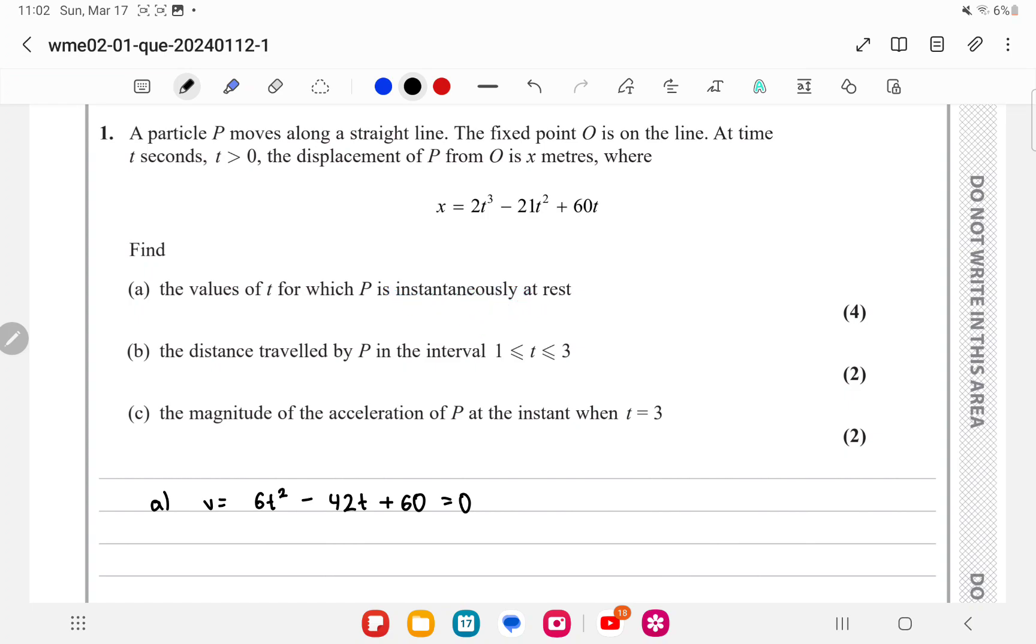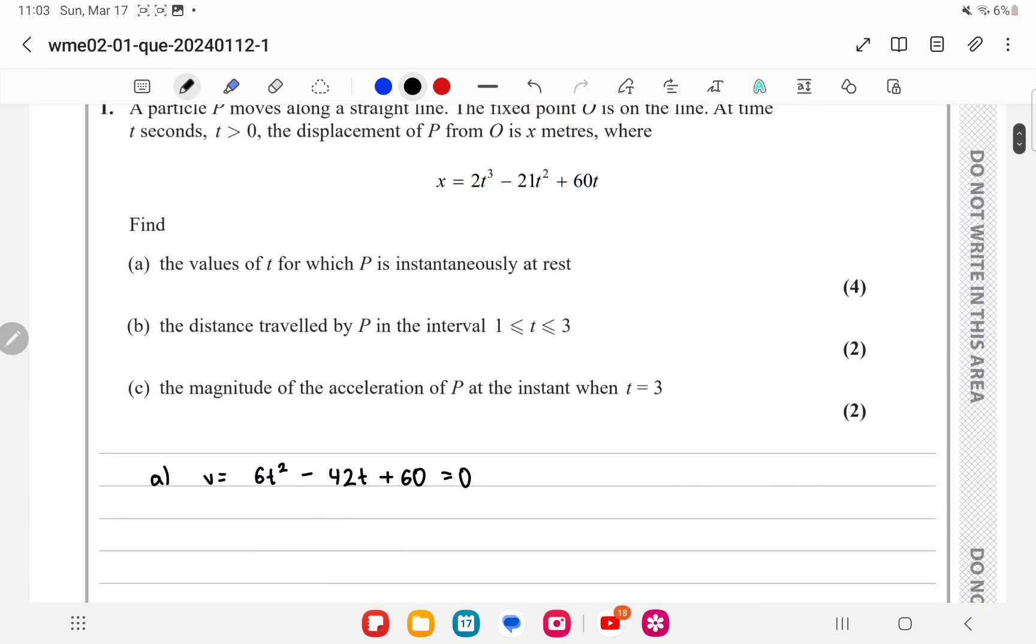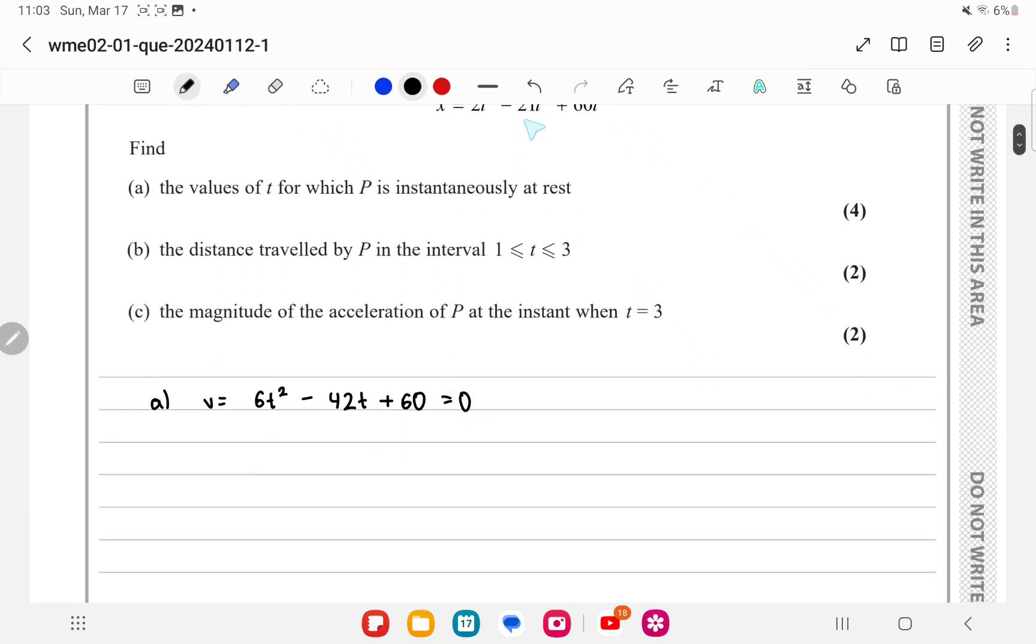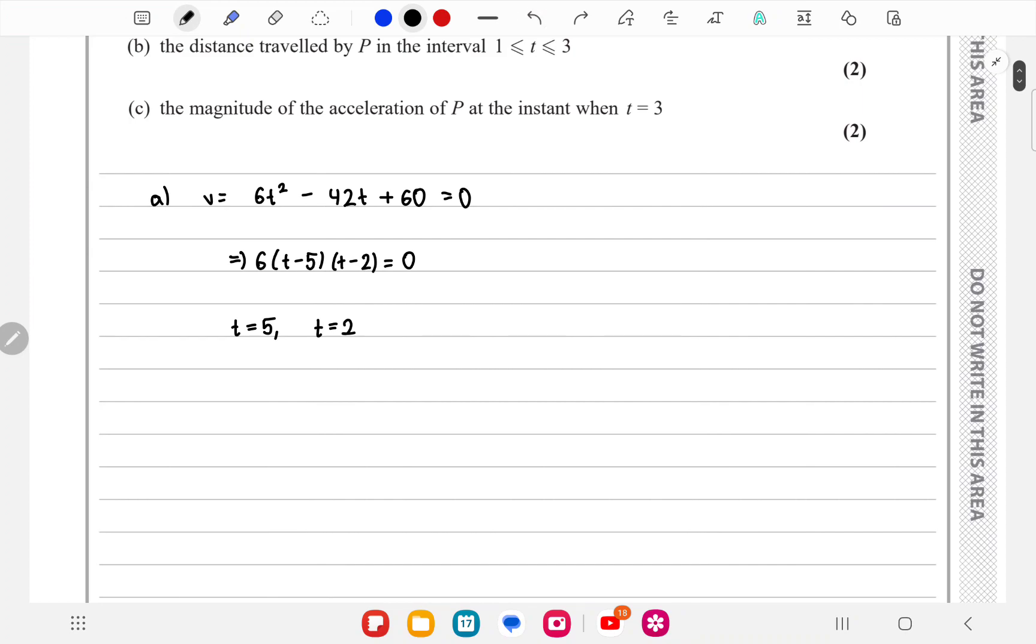We need to find the times at which the velocity is zero. We differentiate this at first, get 6t² - 42t + 60 and equate that equals to zero. We solve this quadratic and get the values t equals to 5 and t equals to 2.